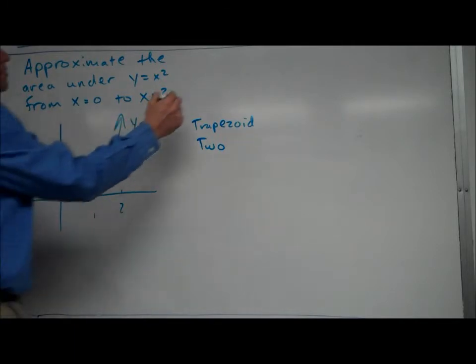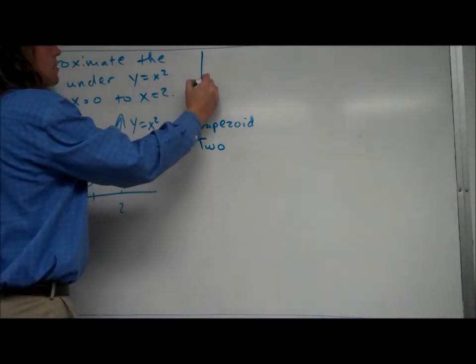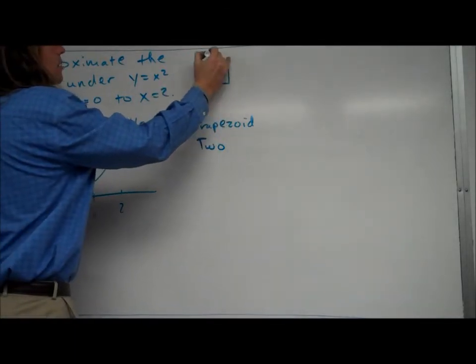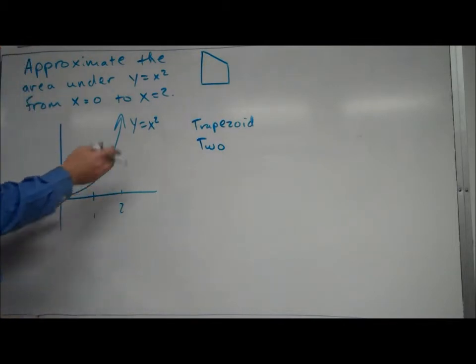So the trapezoids that we'll get will look something like this. That's a possible trapezoid. Ours will look a little different because our graph is increasing as opposed to decreasing.